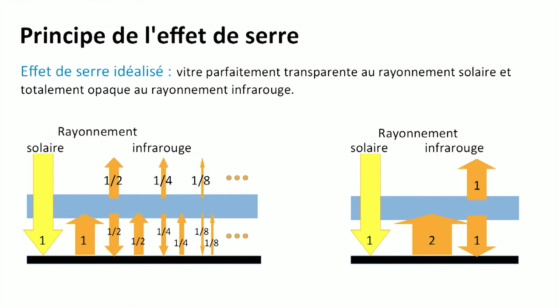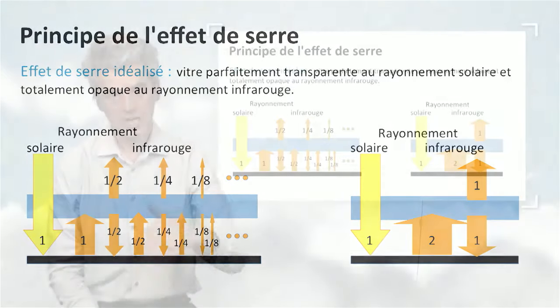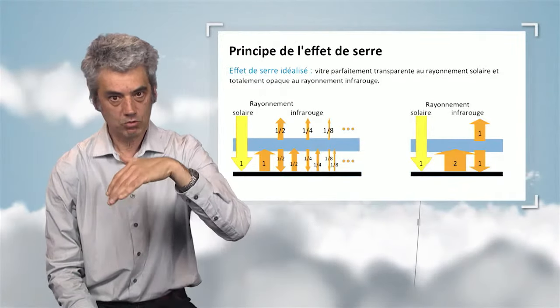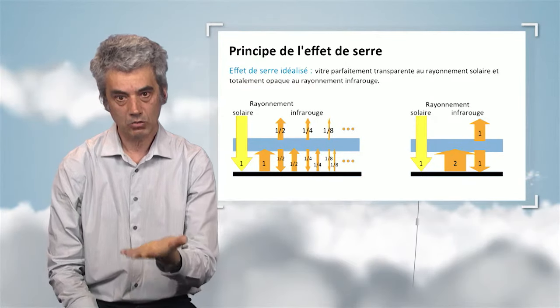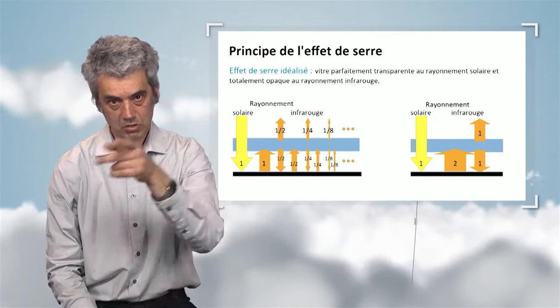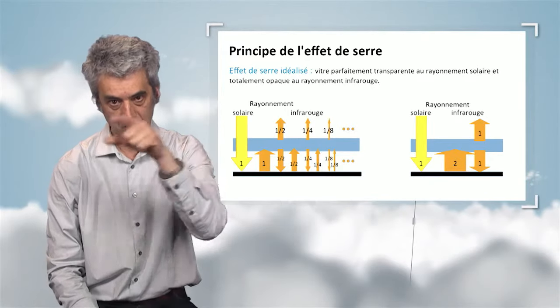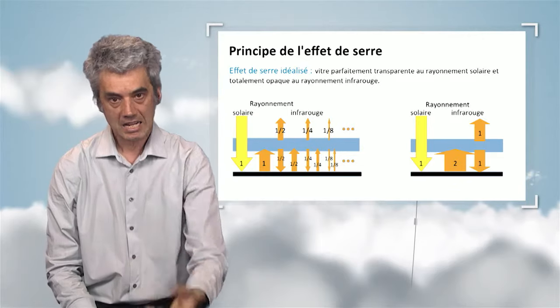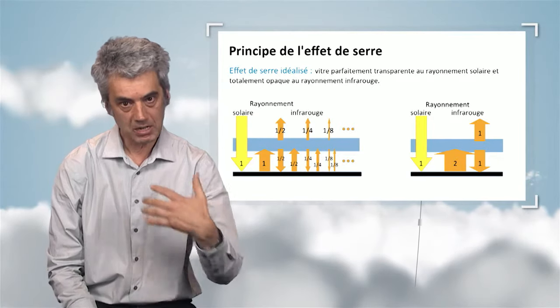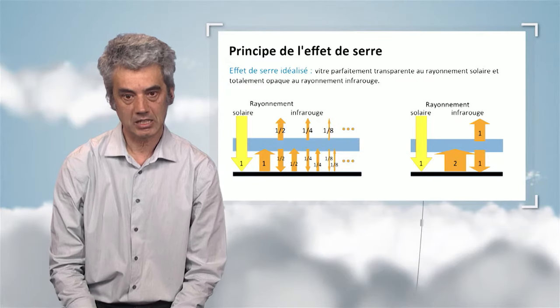The downward-going energy heats up the surface of the plate, which releases more infrared rays, which are absorbed by the window, which heats up again and releases half upwards and half downwards. The downward-released energy is absorbed by the plate underneath, and so on. If we sum all of this up, the surface underneath — because of rays being emitted both upwards and downwards — will not release one but two units of energy, and the temperature will be increased by the greenhouse effect.